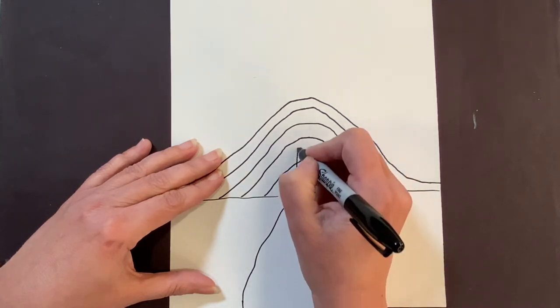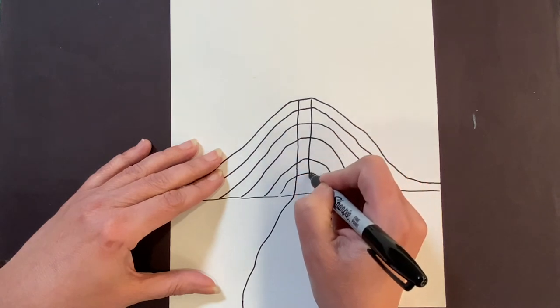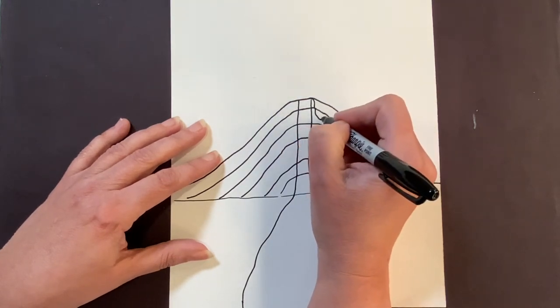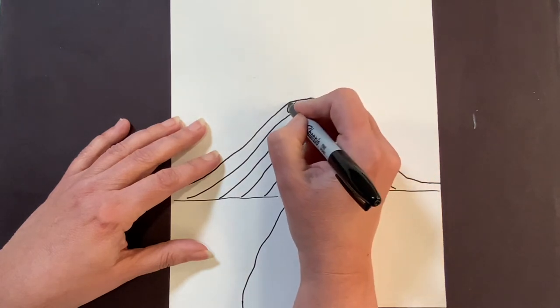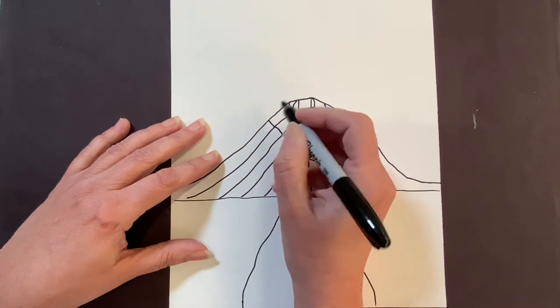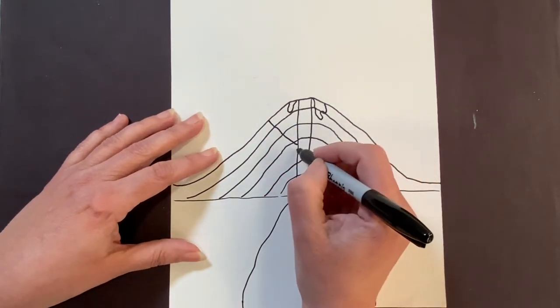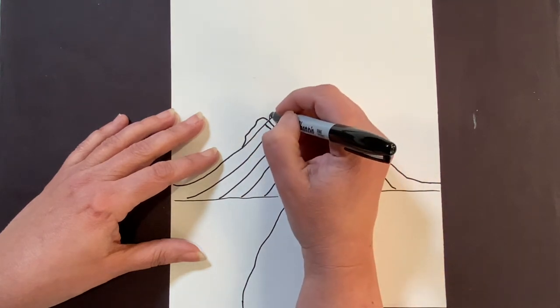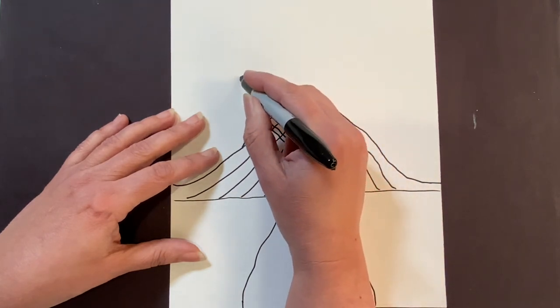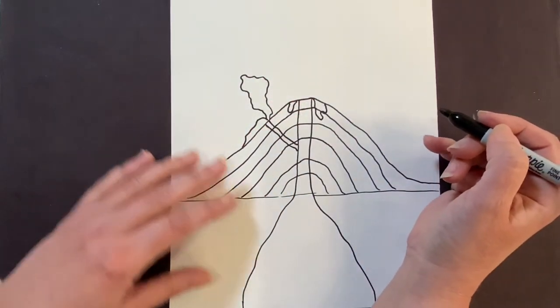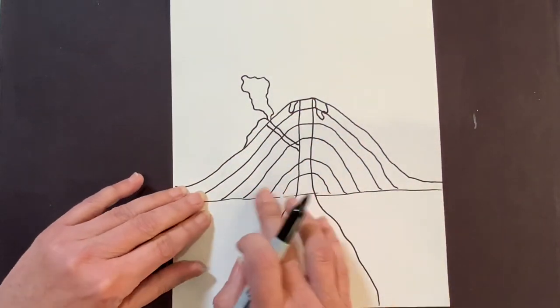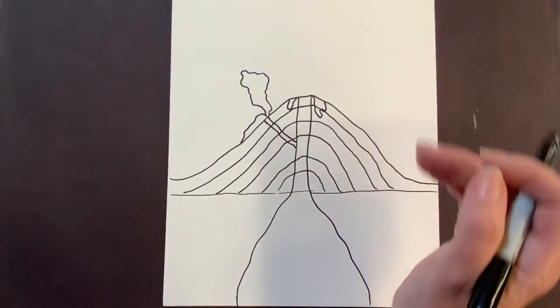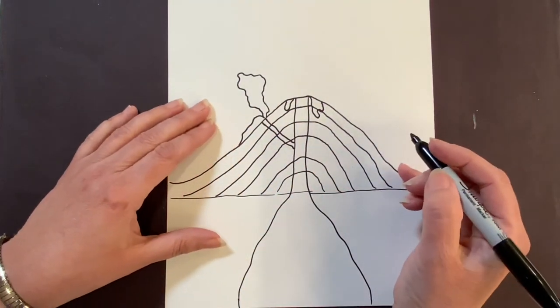Right here is going to be where my magma will be down here. This is going to be my magma chamber. Remember that's where the pressure is. It's going to come straight up. This is where the lava is going to flow out. You can put a little bit of lava if you want. I might put some on this side too.